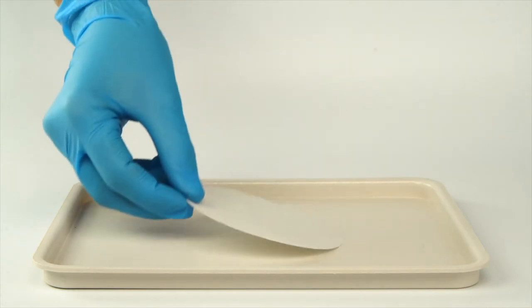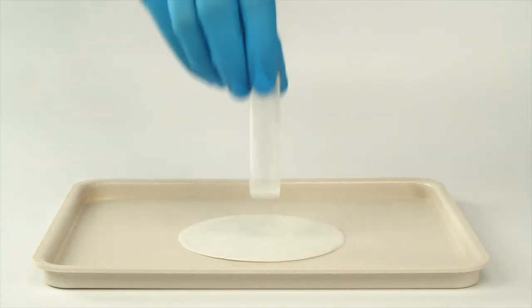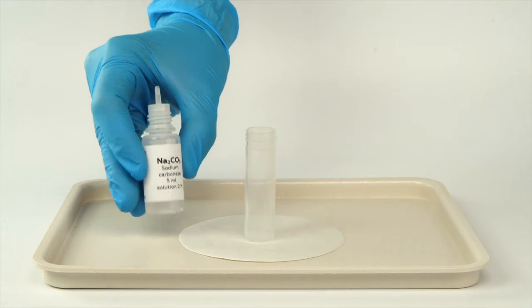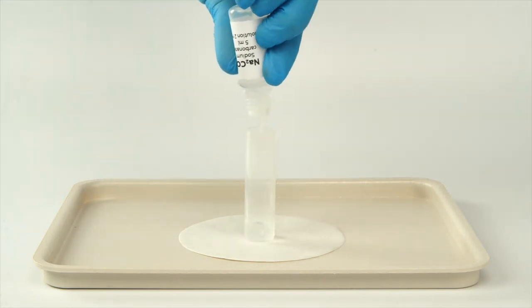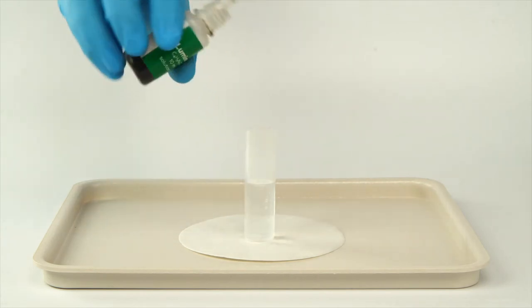First, prepare an alkaline luminol solution. Place your vial on your piece of filter paper. Pour one bottle of sodium carbonate solution into the vial. Add 15 drops of luminol solution.